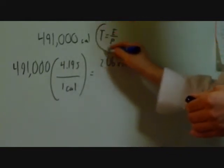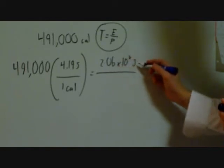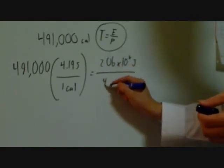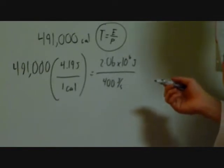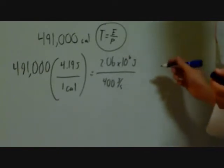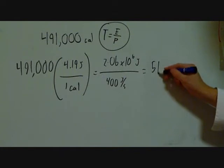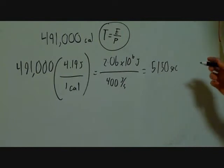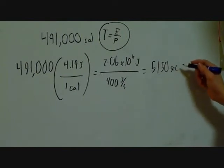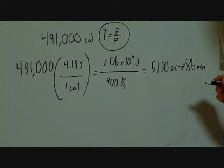This is where our equation comes into place. There are this many joules divided by 400 joules per second, which is the rate at which your body would consume calories swimming very hard. We find that it would take 5,150 seconds to burn off this many calories. And if we convert seconds to minutes, we find that it would be 86 minutes of swimming vigorously to burn off the calories in one meal.